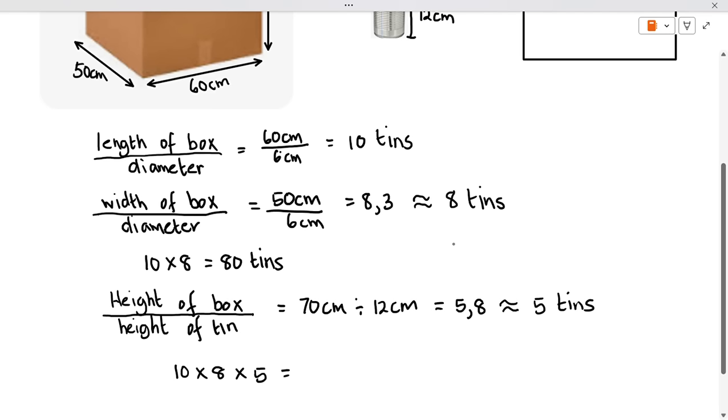We multiply them all together, or you could just say 80 times 5 from your previous answer, and that's going to give you 400 tins. So basically 400 tins will fit in this box.